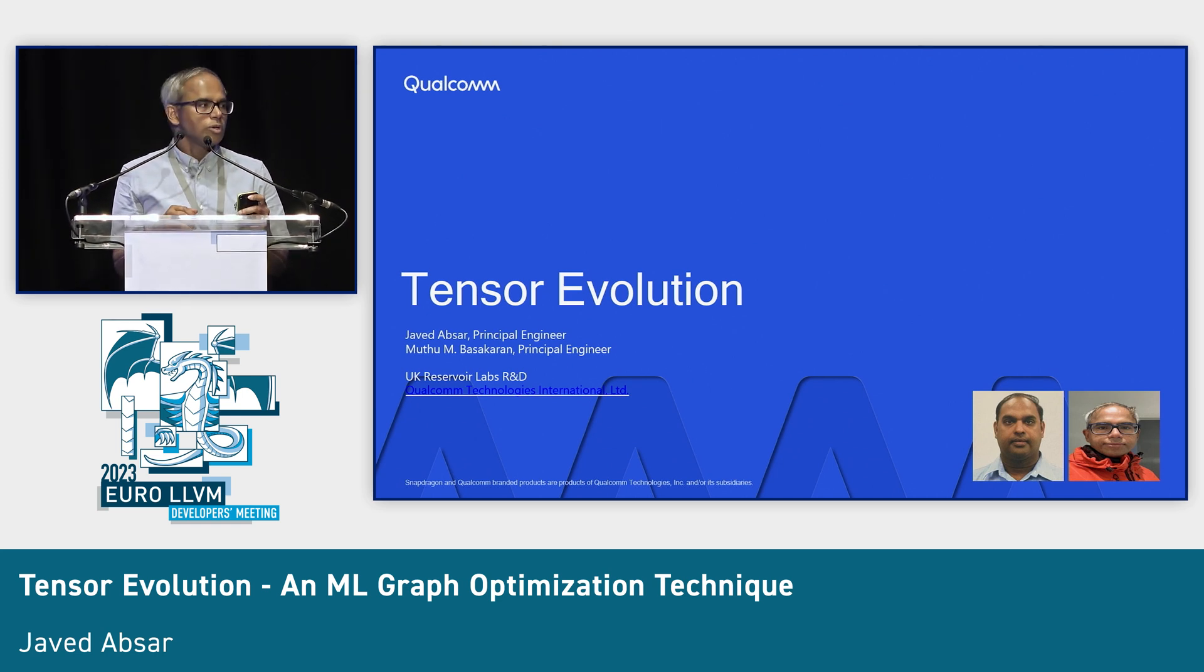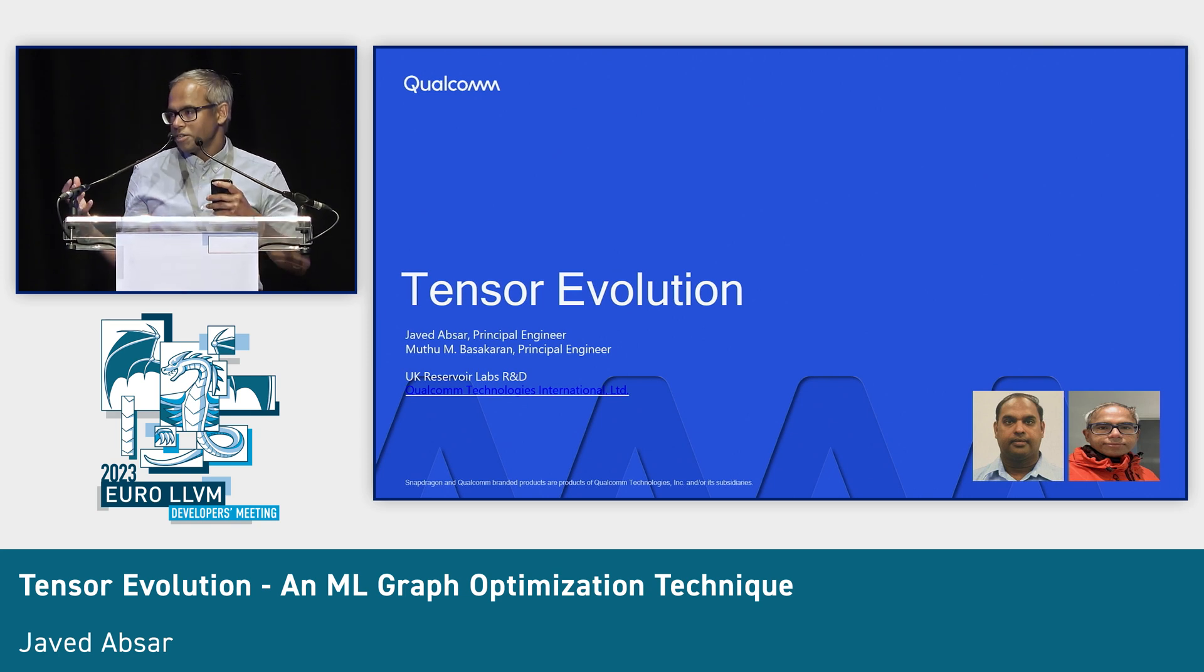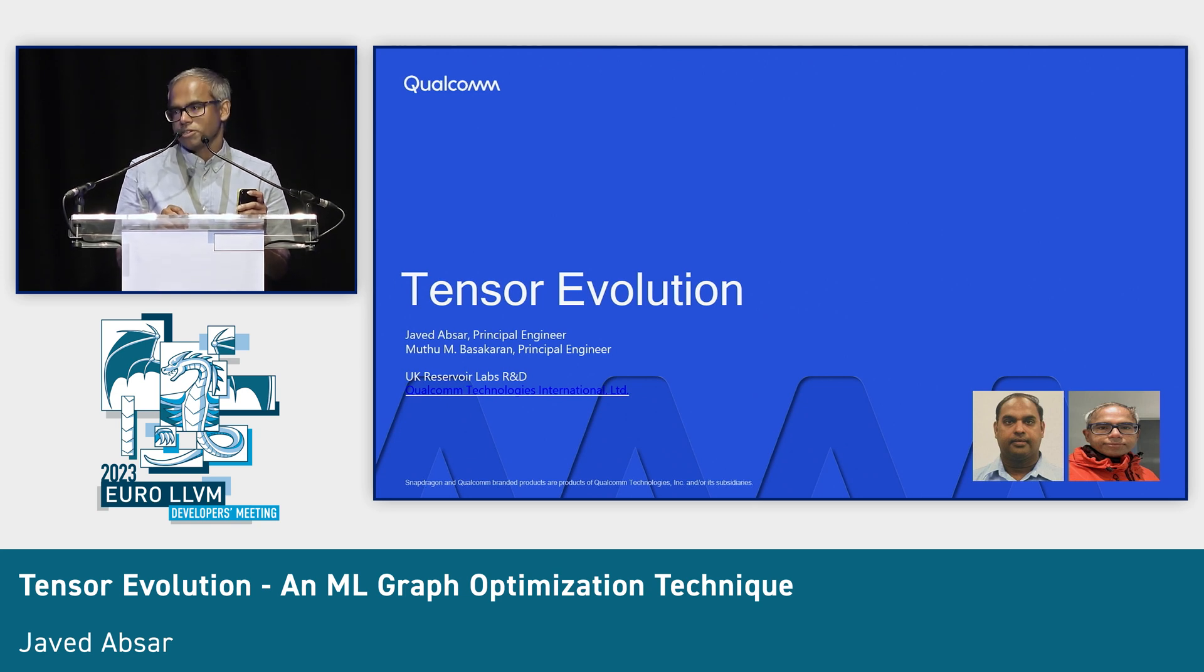I'm presenting a new way of analyzing tensors in graph compiler, and it's not a completely done work, so I'm looking for collaboration. That's one reason to present it here and seek collaboration to get it into MLIR.